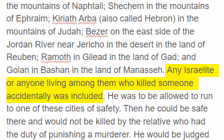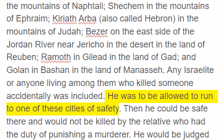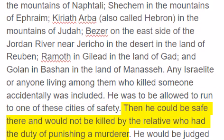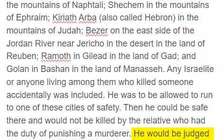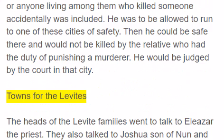Any Israelite or anyone living among them who killed someone accidentally was included. He was to be allowed to run to one of these cities of safety. Then he could be saved there and would not be killed by the relative who had the duty of punishing a murderer. He would be judged by the court in that city.